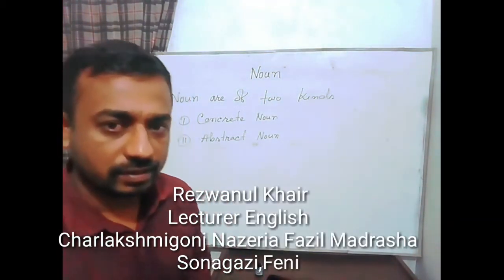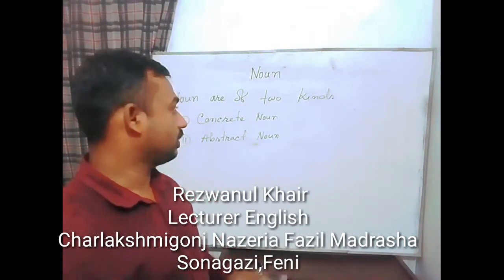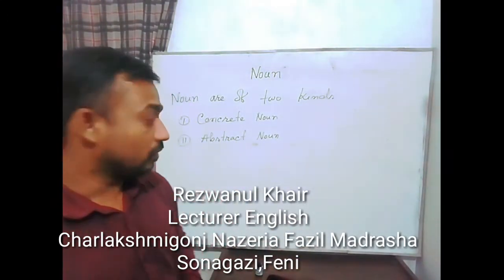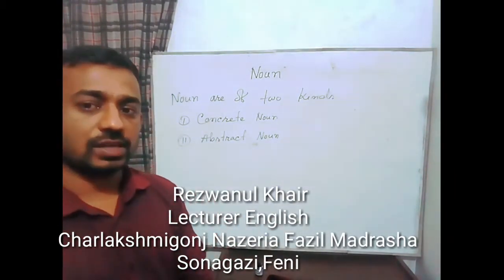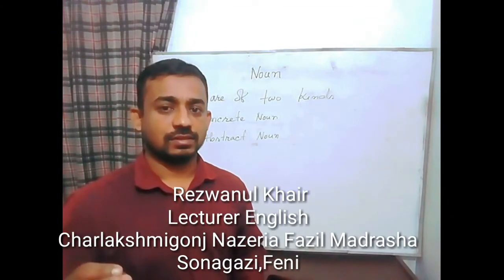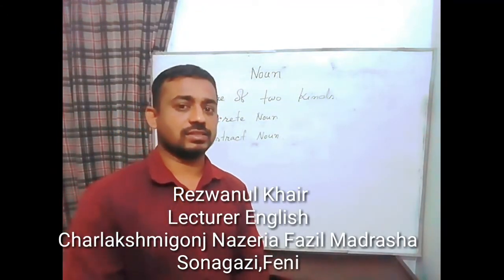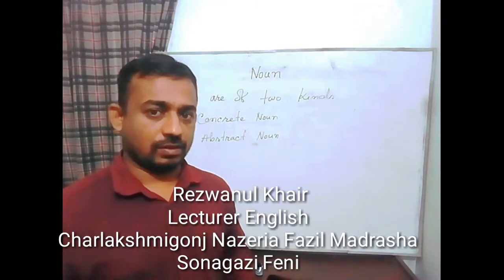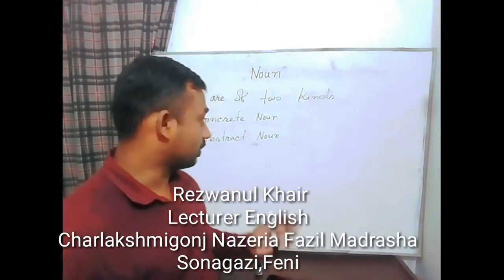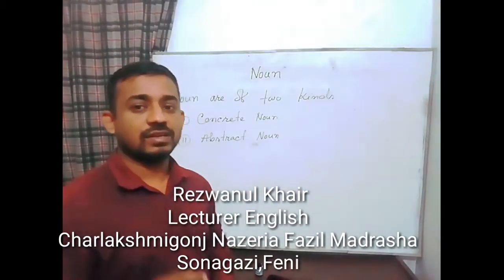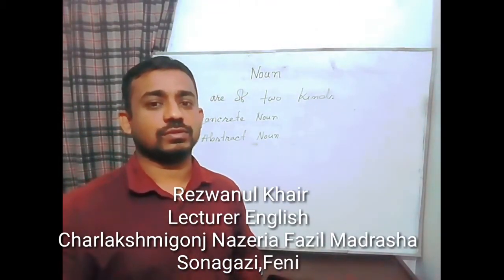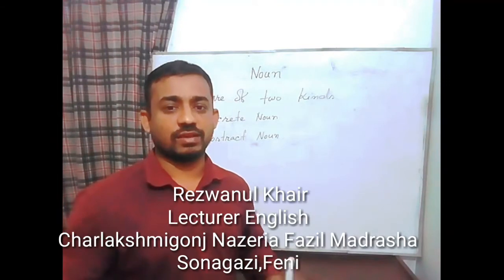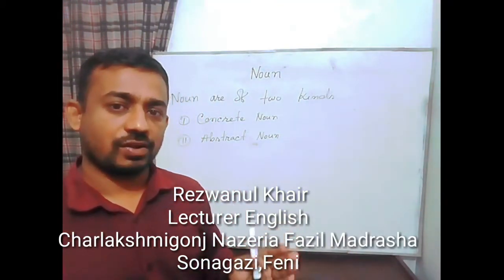These nouns are initially divided into two types. One is concrete noun and the second one is abstract noun. What is concrete noun? Concrete nouns are those types of nouns which have physical existence — which can be seen, heard, or touched. That is, which can be felt with our senses. This type of noun is called concrete noun.